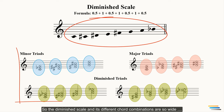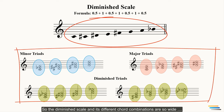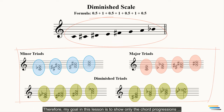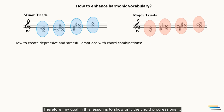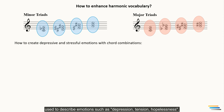The diminished scale and its different chord combinations are so wide that you can create music with themes such as horror, action, drama, love, and song. My goal in this lesson is to show all the chord progressions used to describe emotions such as depression, tension, and hopelessness.